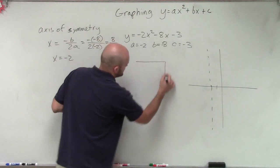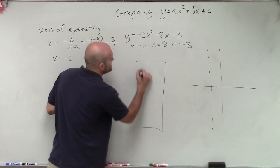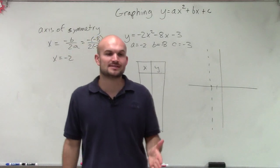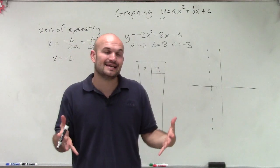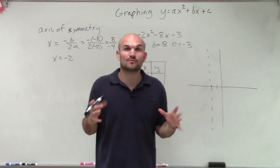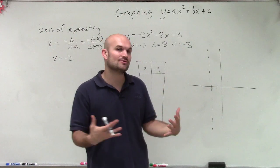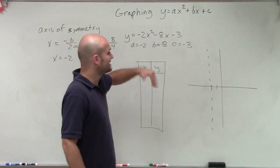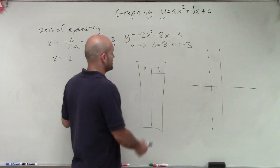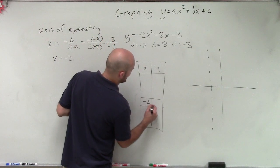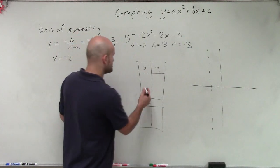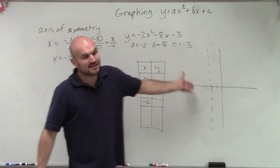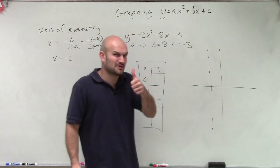So now we need to choose our table of values. Before, I always chose two points to the left and to the right, so you could see that the y-coordinates are exactly the same. Now we don't have to do all that legwork, especially with a problem like this with a lot of math involved. Since my axis of symmetry is at negative 2, I'm simply going to pick two points to the right — I like 0 and negative 1, those are good numbers to use.